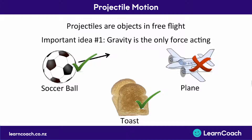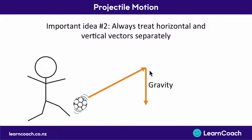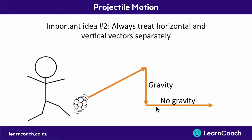Another key idea is that we always need to treat the horizontal part of movement and the vertical part of movement completely separately. If a soccer ball is flying up at an angle, part of it is going straight up and part is moving across horizontally. Gravity is the only force acting and it always works downwards, so we split the motion into vertical — where gravity acts — and horizontal.